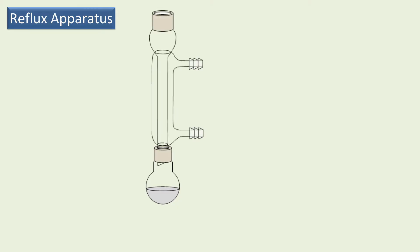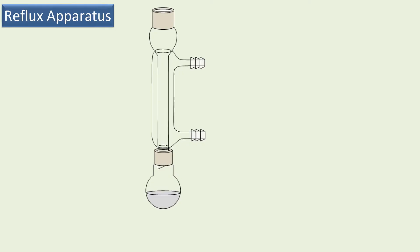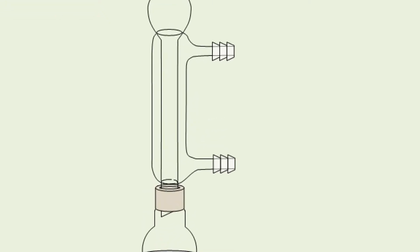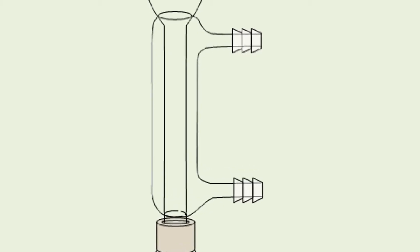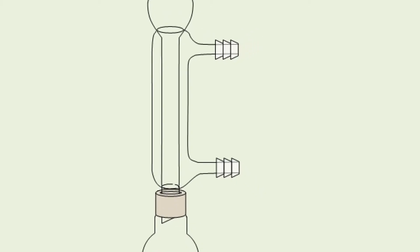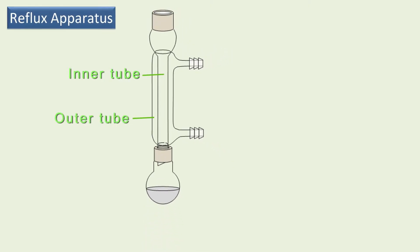A condenser is fitted on top of the RB flask. Looking closely at the condenser we can see that it's a tube within a tube. We have an inner tube surrounded by an outer tube. The outer tube has two openings, one at the top and another at the bottom. We call these ports.